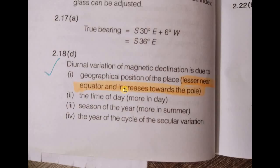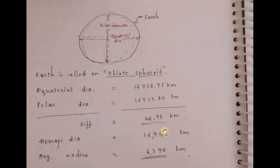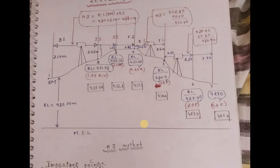The instrument is suspended from the side hook and is used for centering purposes. The Earth is treated as a sphere or spheroid. The equator and polar diameters are almost the same — the average diameter is approximately 6370 km.